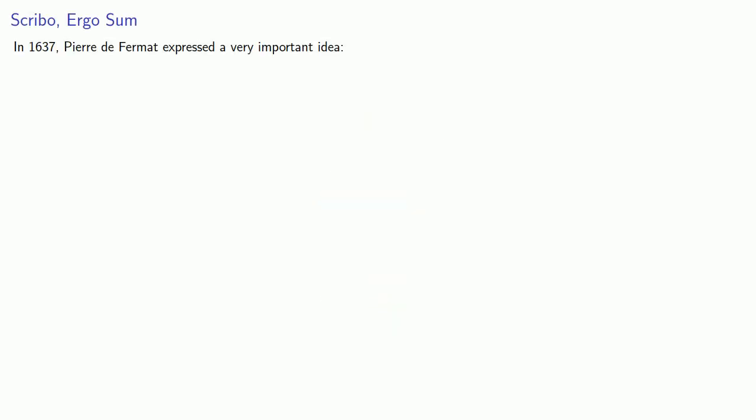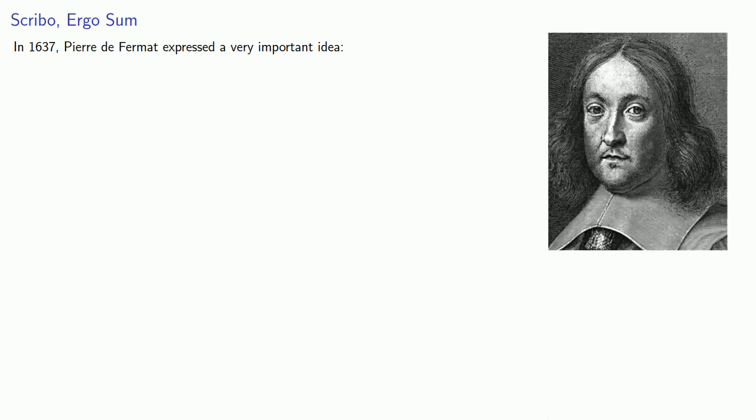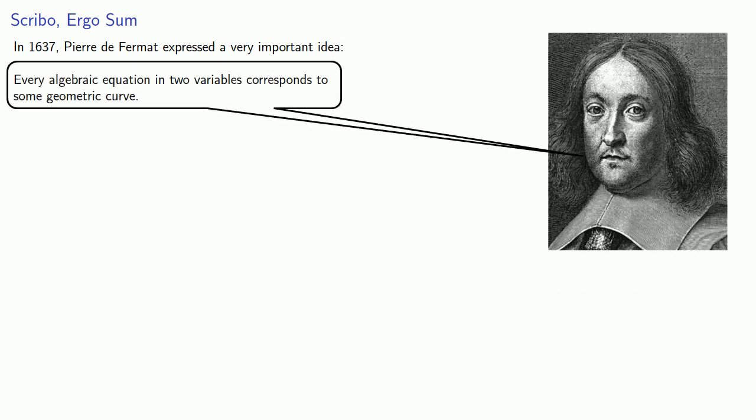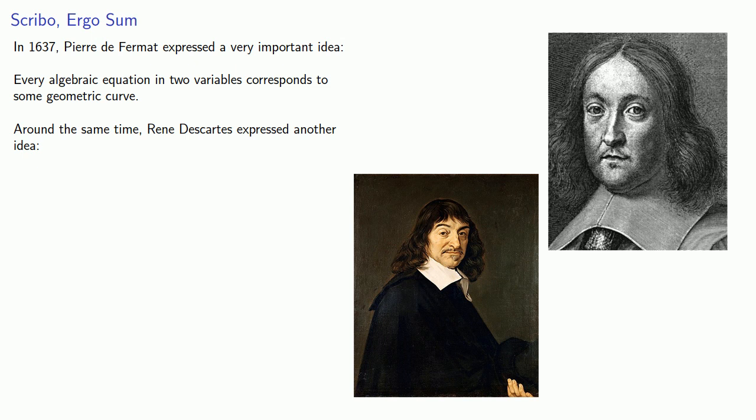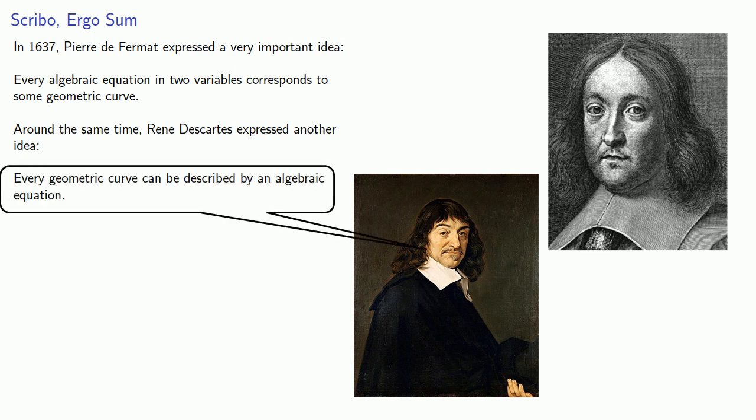In 1637, the French mathematician Pierre de Fermat expressed a very important idea: every algebraic equation in two variables corresponds to some geometric curve. Around the same time, René Descartes expressed another idea: every geometric curve can be described by an algebraic equation.